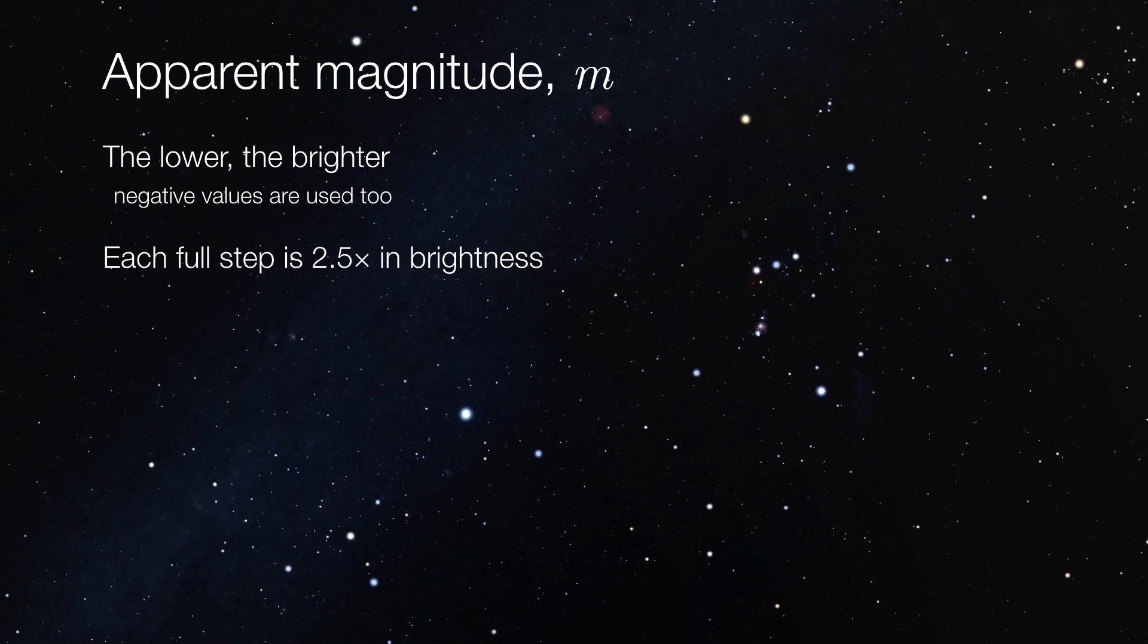Here's a few examples. Betelgeuse is at a magnitude of plus 0.45. Bellatrix at plus 1.60. This little guy over here, HIP 3903, is plus 4.9, so that's pretty close to the limit of human detectability.